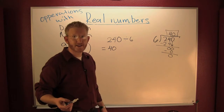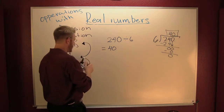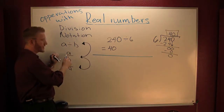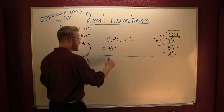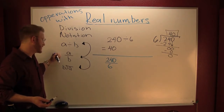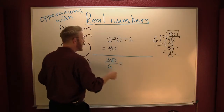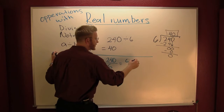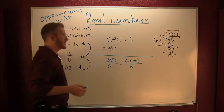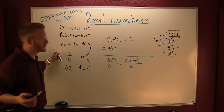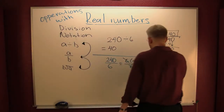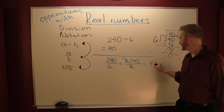That was one way to do it. Another way would have been to break it down. Had I written this in vertical notation — two forty over six — this is the same thing as my original division problem. We could have seen that six was a factor of two forty: six times forty, all over six. So now what do they do? They fight! And after the dust settles, what's left? Forty!